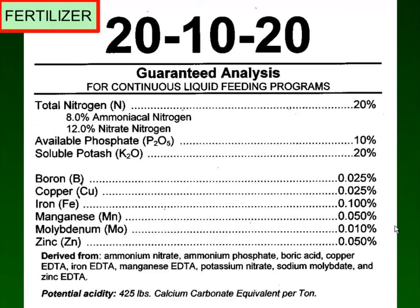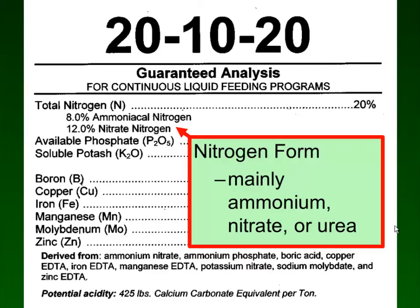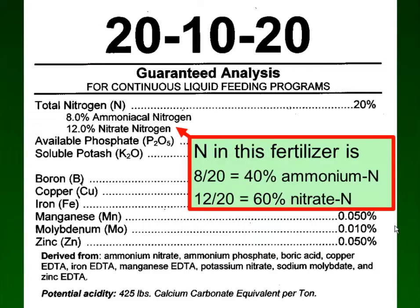The next factor is fertilizer. Here we've got an example fertilizer label for 20-10-20 — that's 20% total nitrogen in this fertilizer. We're going to focus in on nitrogen, and there are three common nitrogen forms in a water-soluble fertilizer: ammonium, nitrate, or urea. This fertilizer contains ammonium nitrogen and nitrate nitrogen. Out of this 20% total nitrogen, 8% of it is ammonium and 12% is nitrate.